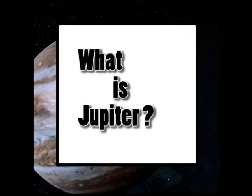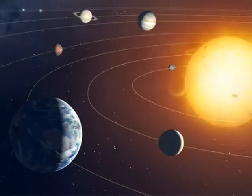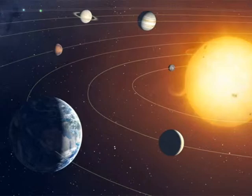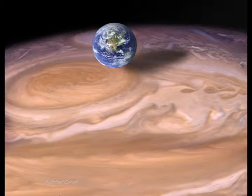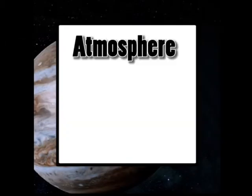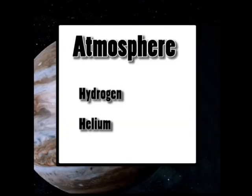Now before we begin we have to ask ourselves what is Jupiter? Jupiter is the fifth planet from the sun. It's the largest planet. It is so large that 1300 earths could make up its size, and as you can see here the great red spot, which we'll get to later, is about two to three times larger than Earth is.